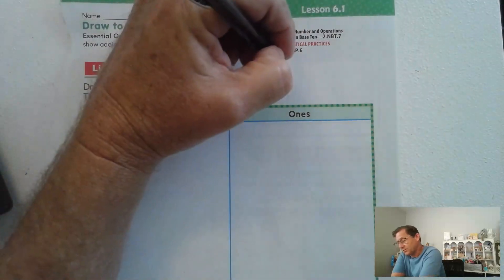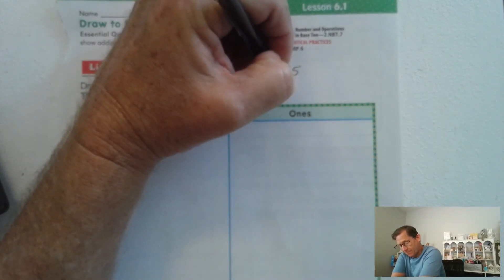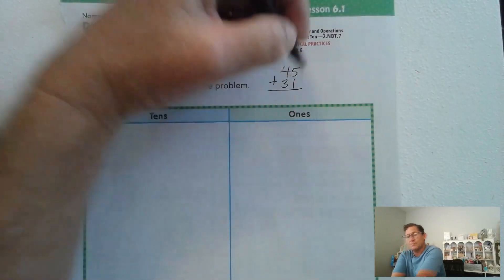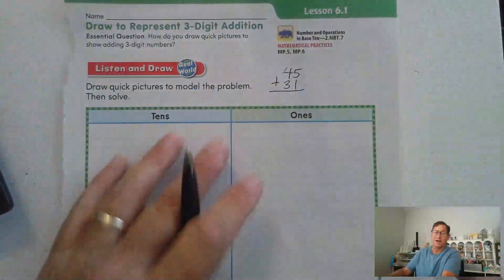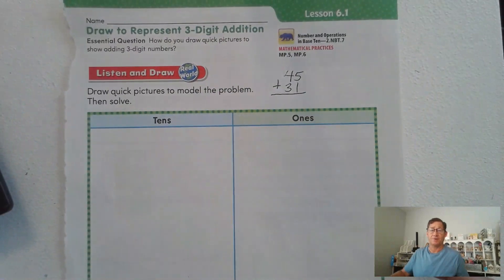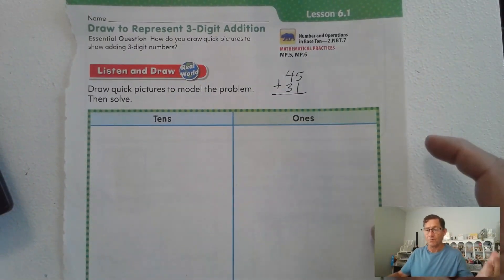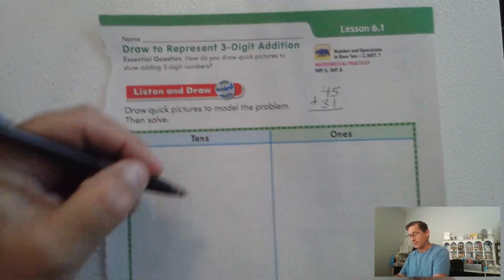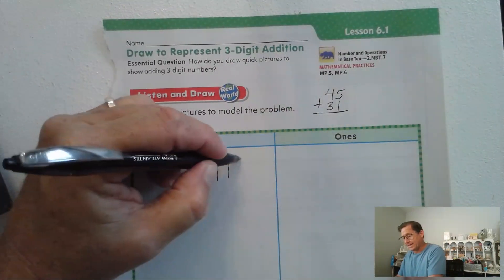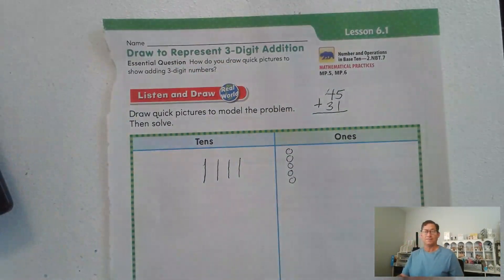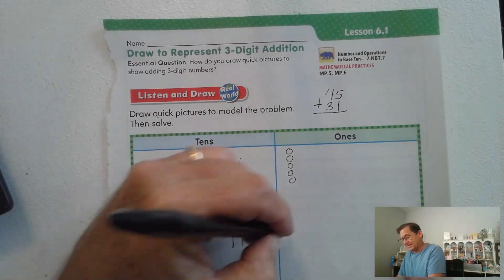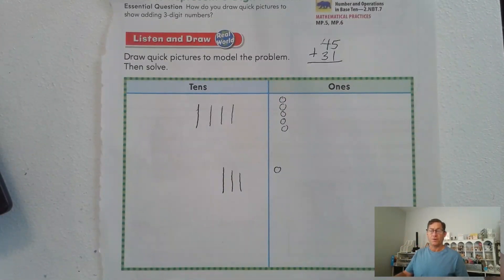Alright, so is this what you came up with? So we're modeling 45 plus 31. And we know that we could probably just do that one actually in our head, because there is no regrouping involved. But it says draw a quick picture, so we'll draw four tens, and five ones, and three tens plus one for 31.